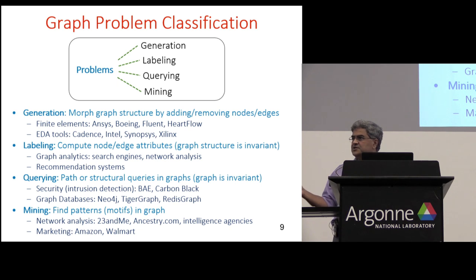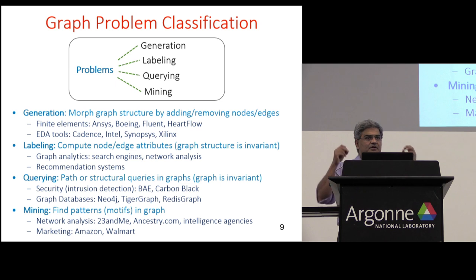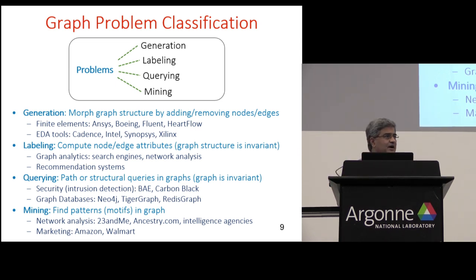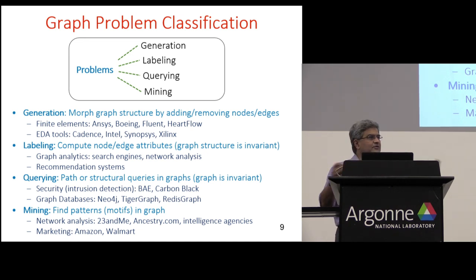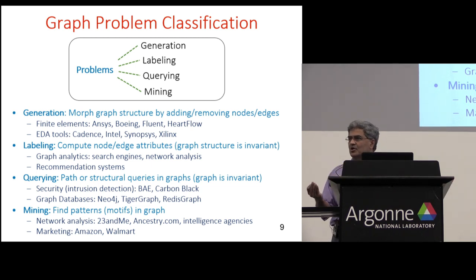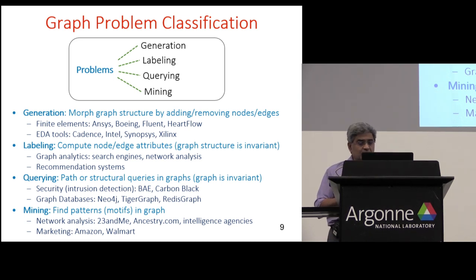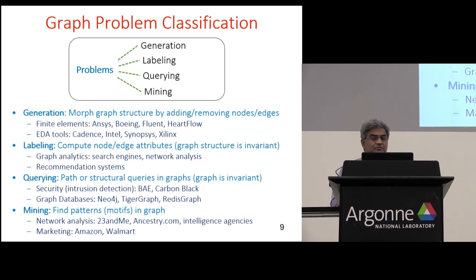Labeling: the graph structure is invariant — you're not adding or removing nodes and edges — but there are labels on nodes and you're computing what those labels should be. All the classic graph analytics applications are examples: breadth-first search, single source shortest path, and the PageRank computation we talked about earlier. Recommendation engines used by Amazon, Netflix, and so on are also examples of labeling problems on big graphs.